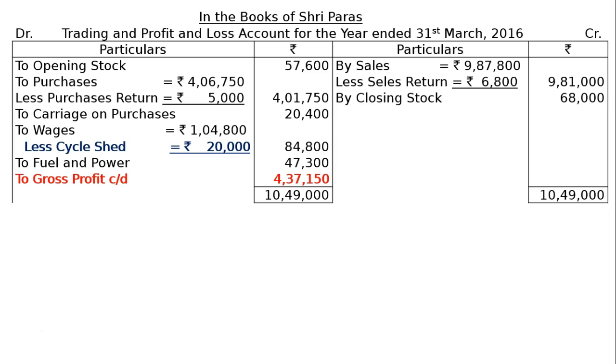In the Profit and Loss account, we have to write down by gross profit brought down Rs. 4,37,150.